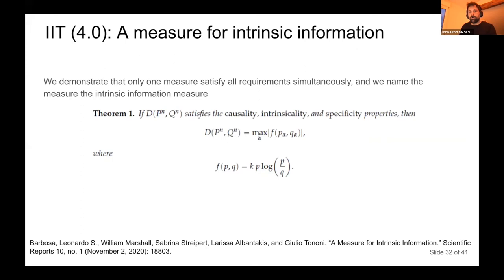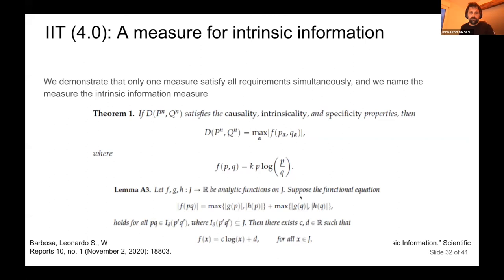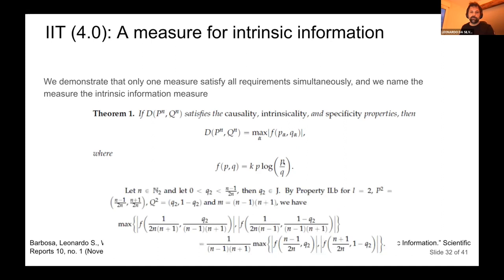We call it the intrinsic difference — not a divergence (we don't know its geometric properties) and not a distance (it's not symmetric). The form is: the maximum over all possible states alpha of k * P_alpha * log(P_alpha / Q_alpha), where P and Q are the probability and the partition probability of each state, and k is a constant (we can set it to one). It's not a sum like most information measures. To show uniqueness, you use the Cauchy functional equation to get the log part, then use smoothness and analytic extension.